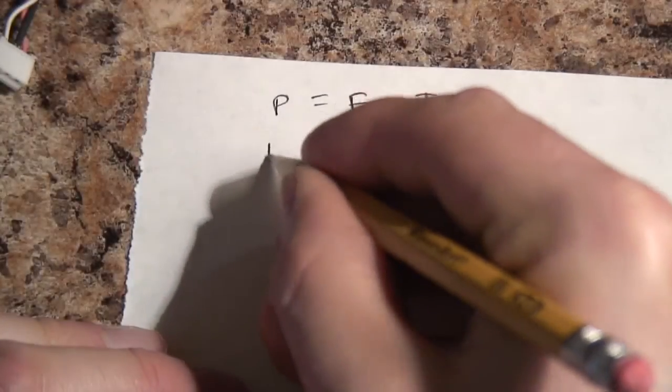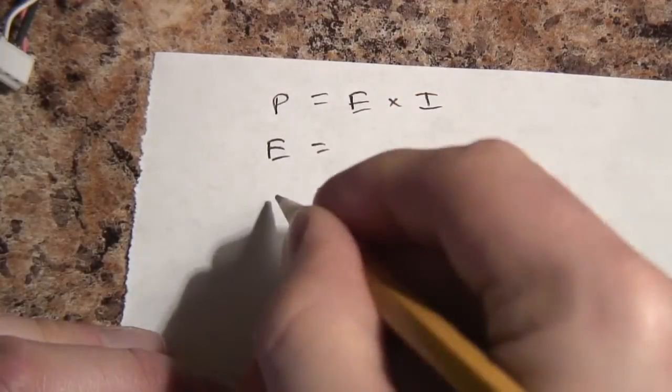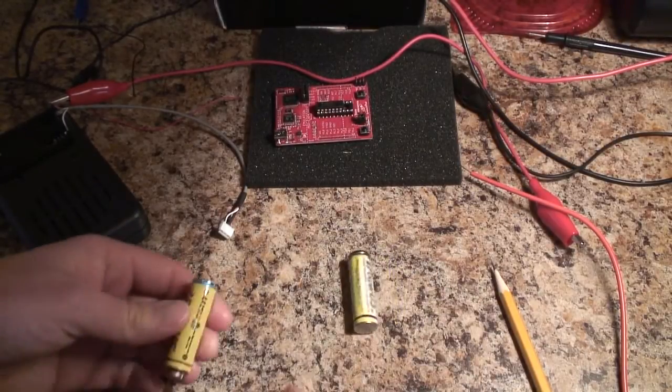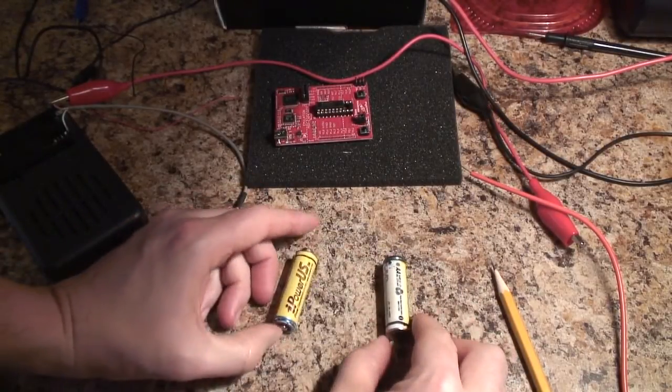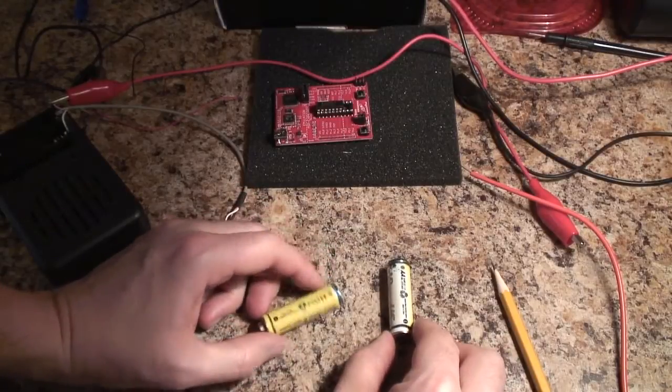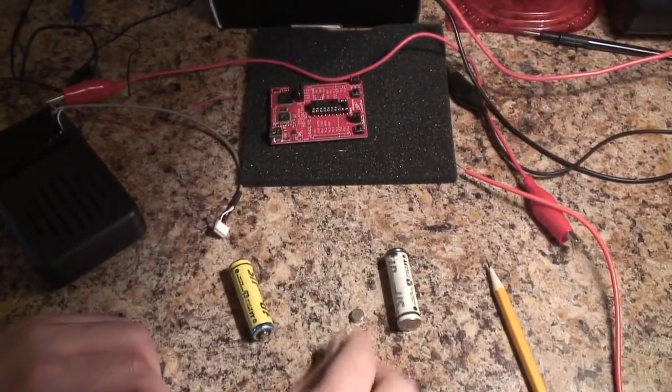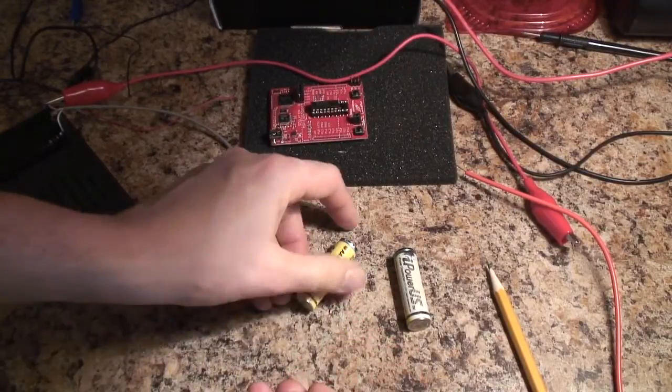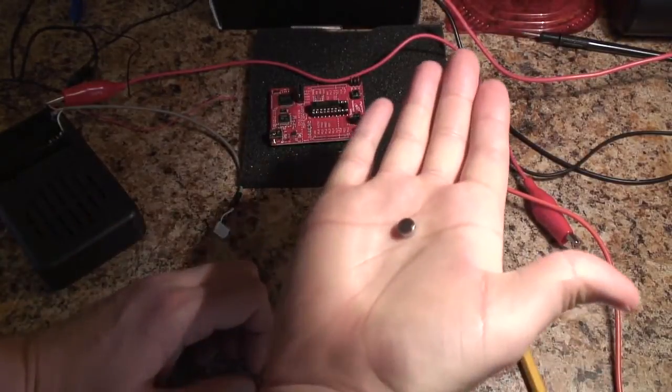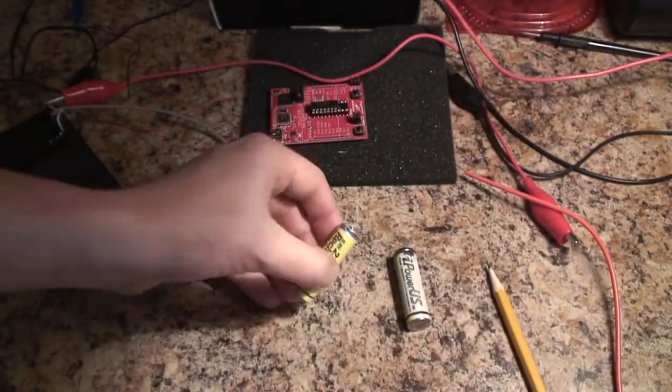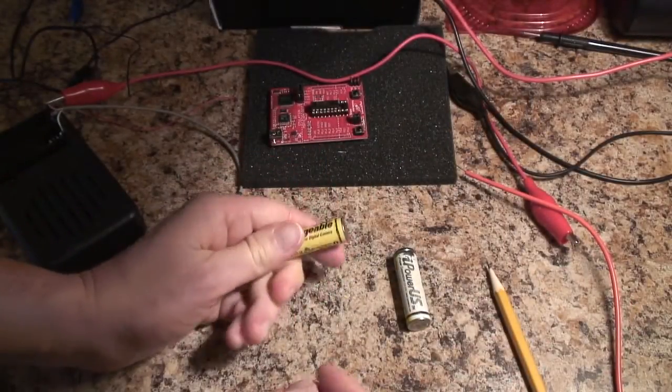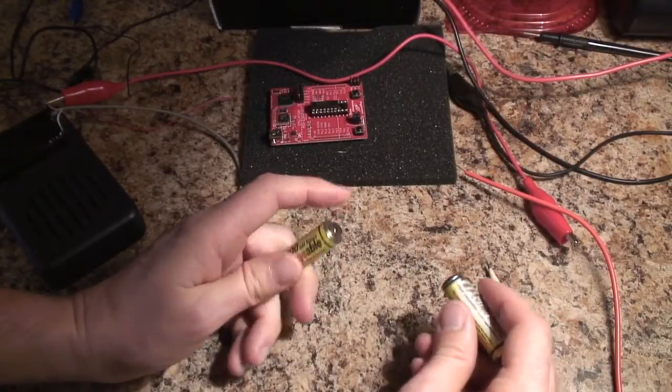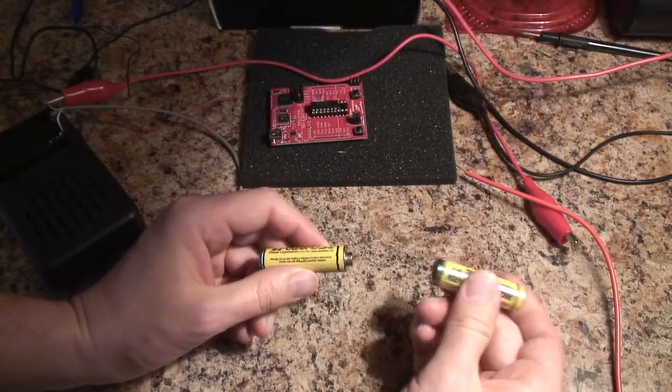So first we need to measure the voltage and then the current. I am going to power the MSP430 using a couple of scrap batteries. I'm going to put these batteries in series using a couple of magnets. These are neodymium magnets. I like to use these to connect batteries together. Makes it pretty easy when you don't have to solder anything.